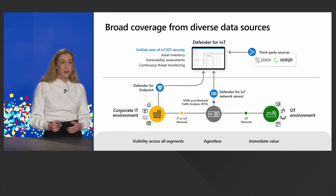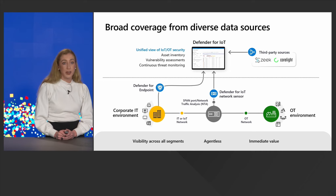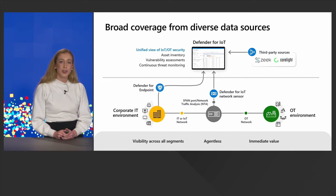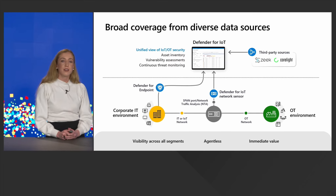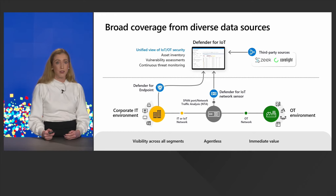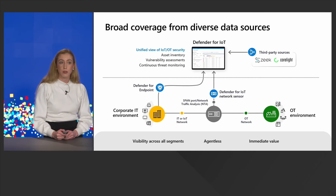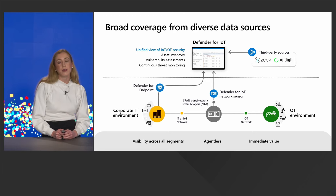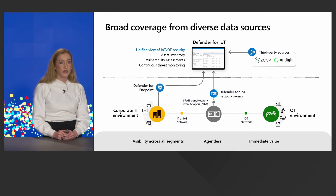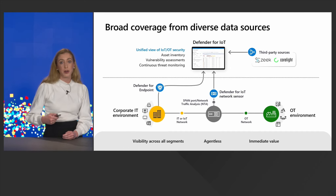These are the three options to bring data into Microsoft Defender for IoT. Afterwards, Microsoft Defender for IoT automatically provides an asset inventory — listing all IoT and OT devices present in the network, including device type, vendor, IP address, and MAC address — and draws the network topology between them. It checks for CVEs connected to the detected devices and continuously monitors for threats.